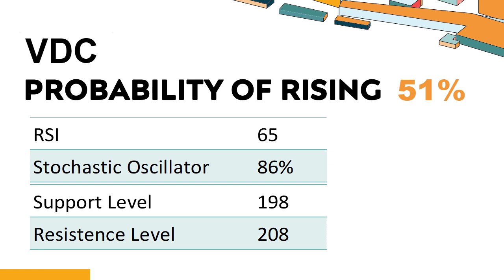DDC's short-term support level is 201. If it falls below 201 during the session, it will have a chance to test 198. DDC's short-term resistance level is 207. If it breaks through 207 during the session, it will look up to 208.